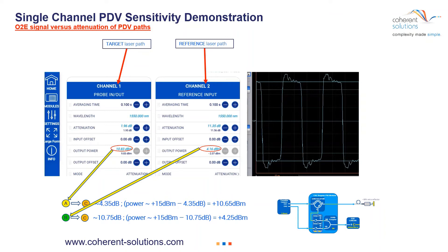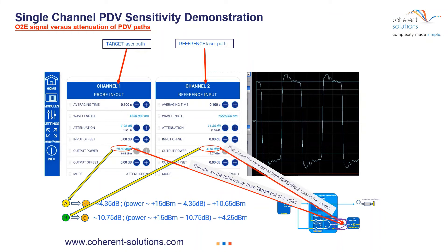I can't stress enough how useful it is to have an individual measurement of the target and the reference contribution going into the ODE converter. This power represents the amount of power coming from the target laser, reflecting off and going back to the Doppler blade before it goes into the ODE converter. And the other power meter is showing the contribution from the reference laser path. These are incredibly useful tools.